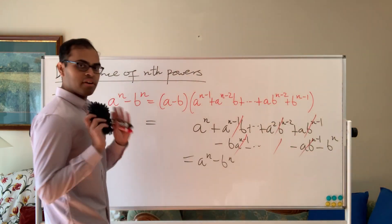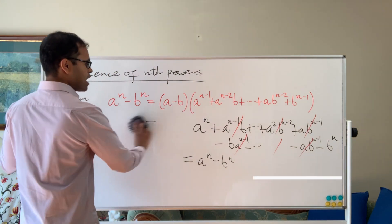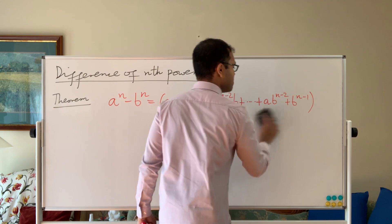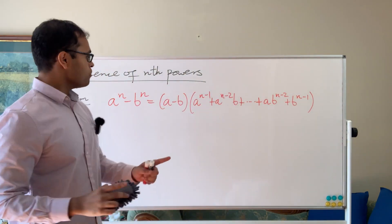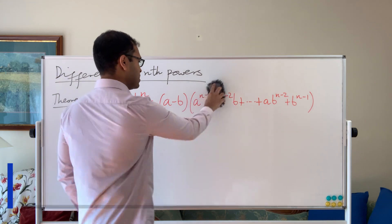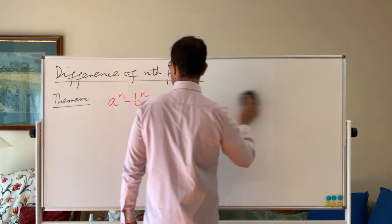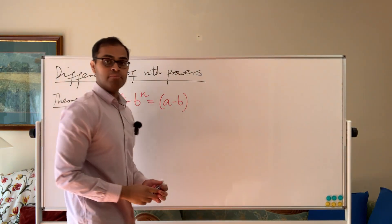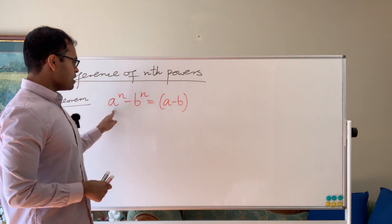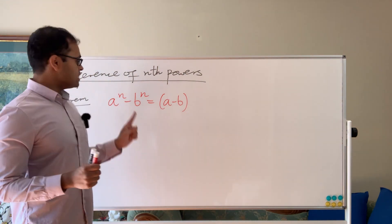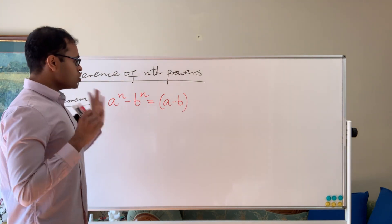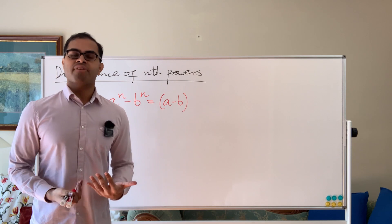The basic idea is that the first step is knowing there is an a minus b factor. The reason we know that: we know a to the n minus b to the n must be a minus b times something, because if a equals b, then a to the n minus b to the n equals a to the n minus a to the n, which is zero. So a minus b has to be a factor.